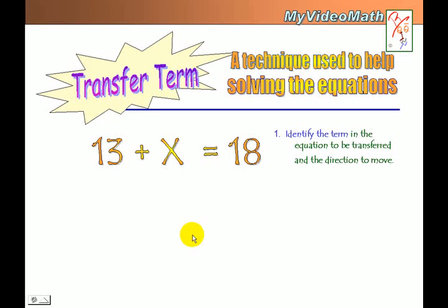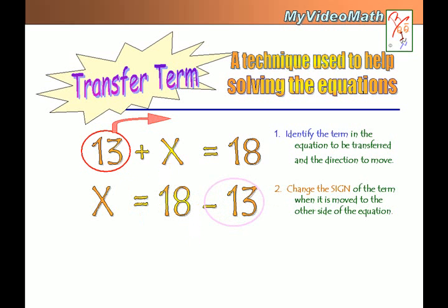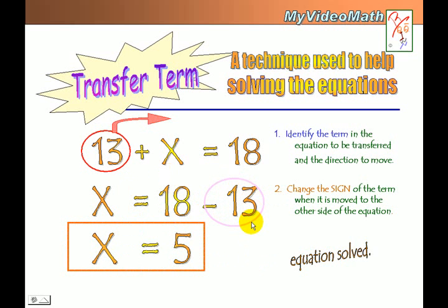What do you think — which term do I need to move? I need to move 13 to the other side. It becomes negative 13, and 18 minus 13 is 5. So x equals 5 — that's my final answer.